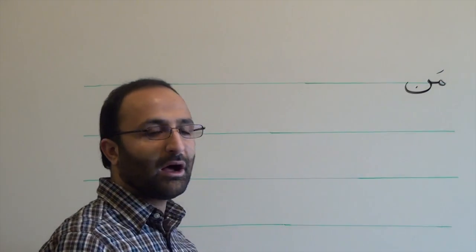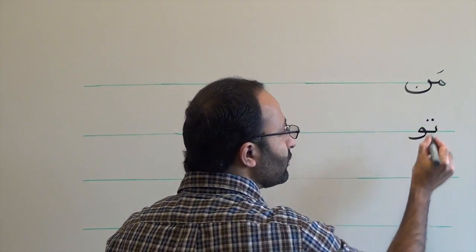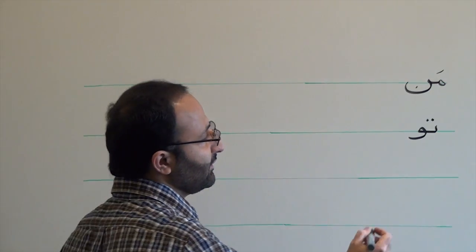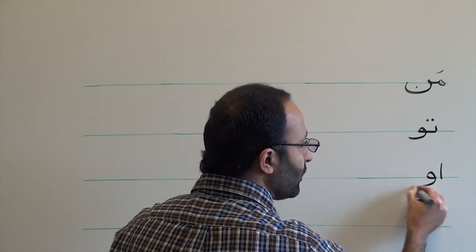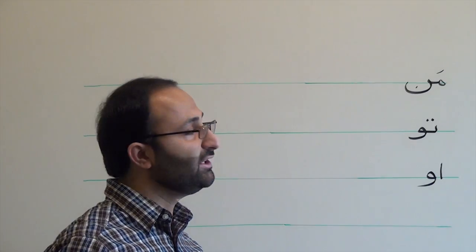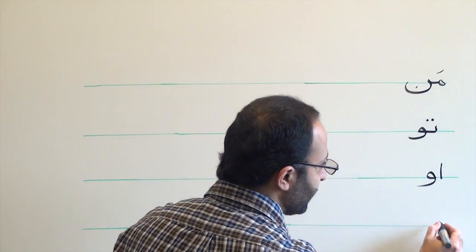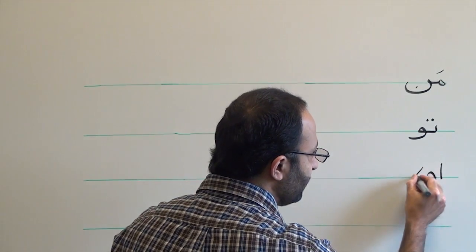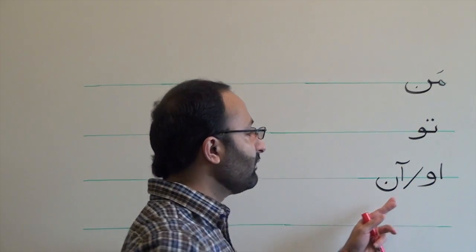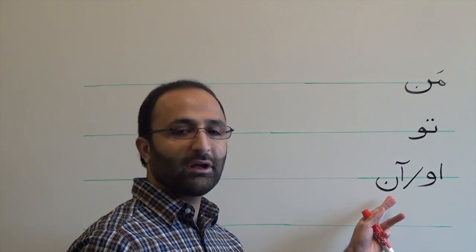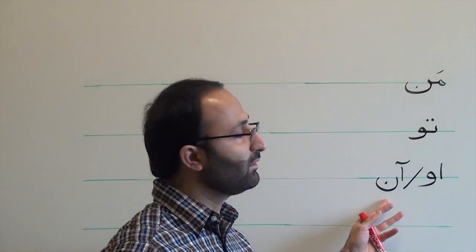Man means I. To means you, singular. U means he or she. There is no gender in Farsi, as you see. And here we can say 'on' for other than human beings, for animals or plants.